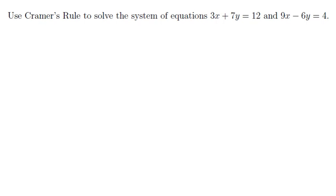Use Cramer's rule to solve the system of equations 3x plus 7y equals 12 and 9x minus 6y equals 4. Notice that our equations of 3x plus 7y equals 12 and 9x minus 6y equals 4 take the form of a linear system.